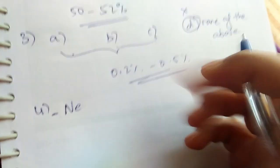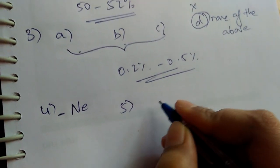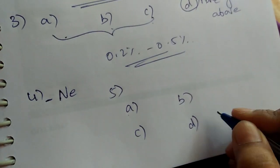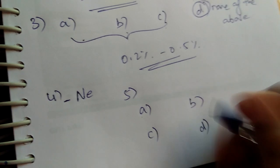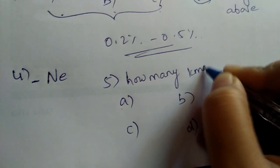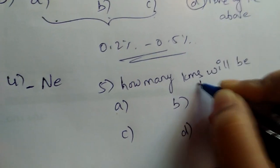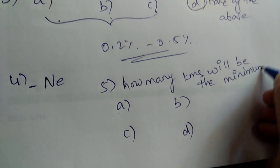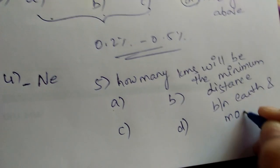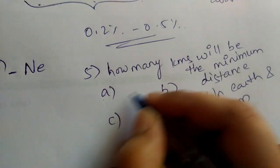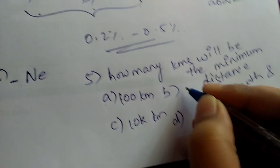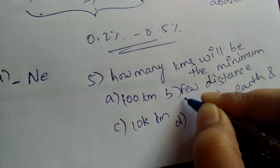Coming to the fifth important tip, whenever you have a question and four options, try to mark the correct answer using logical thinking. For example: How many kilometers will be the minimum distance between Earth and Moon? The options are: a) 100 km, b) 10,000 km, c) a few million km, and d) hundreds of thousands of km.